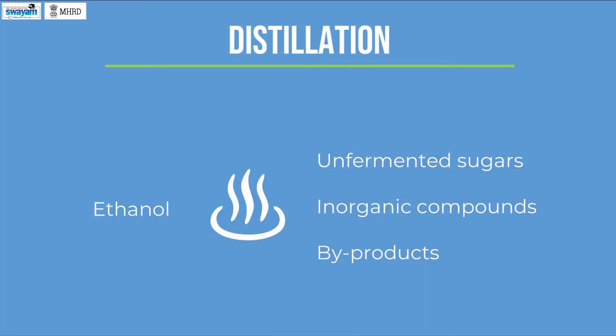Distillation is the most common industrial ethanol purification method. In this method, bioethanol is separated from the raw fermentation product based on the differences in their volatilities. As ethanol is a volatile compound, during distillation, ethanol gets vaporized, leaving behind the residual components, including unfermented sugars, inorganic compounds, and other byproducts.